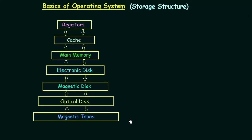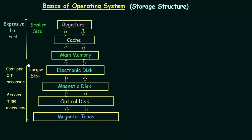As we proceed, I shall explain main memory and secondary storage devices. If you look at this hierarchy, when you go up the hierarchy it becomes expensive, but also fast. The size becomes smaller as you go up, and their access time and cost become higher and higher as we go up the hierarchy.